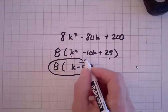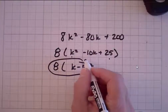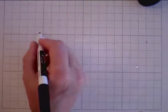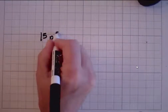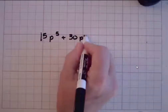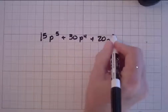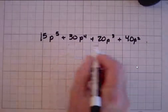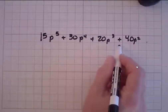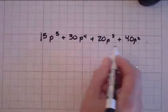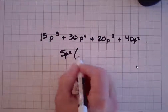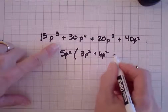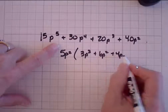Let's see if we can find one more to do: 15p to the 5th, plus 30p to the 4th, plus 20p to the 3rd, plus 40p squared. The first thing I do is look at all of these — I can take a 5 out of each, and I can take p squared out of each. So if I take a 5p squared out, I'm left with 3p cubed plus 6p squared plus 4p plus 8.